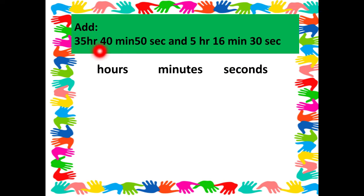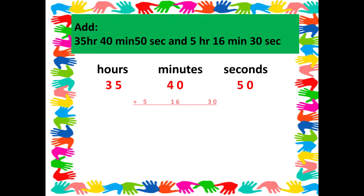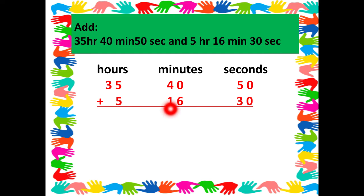After this, we will arrange the two times given to us. The first time is 35 hours, 40 minutes, 50 seconds — we arrange that first, so we write 35, 40, and 50 under the different headings: hours, minutes, and seconds. Then we write the second time: 5 hours, 16 minutes, and 30 seconds.